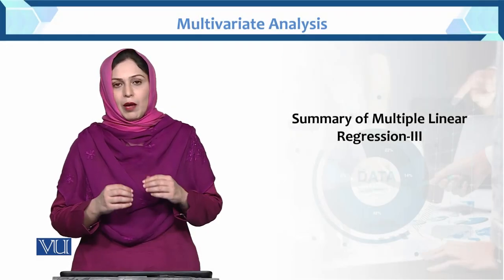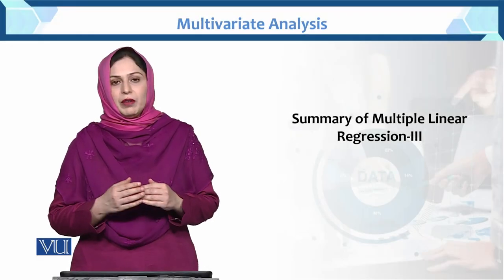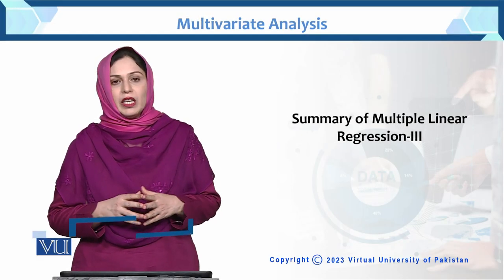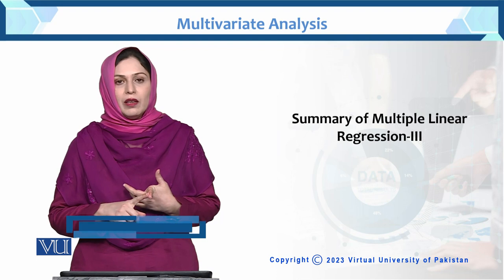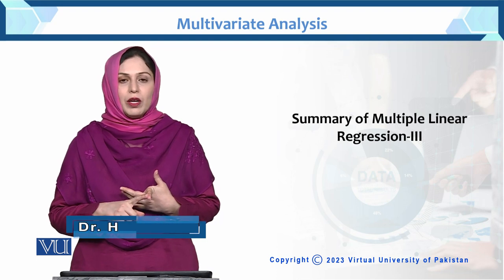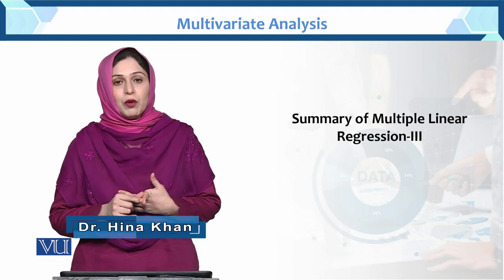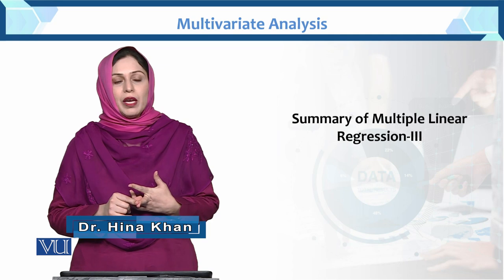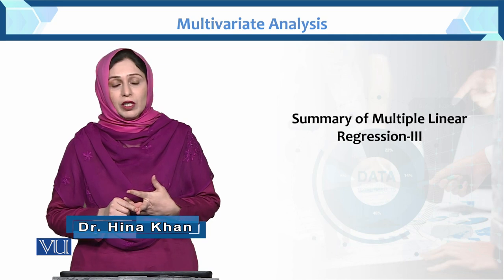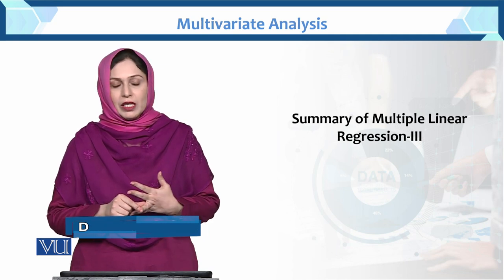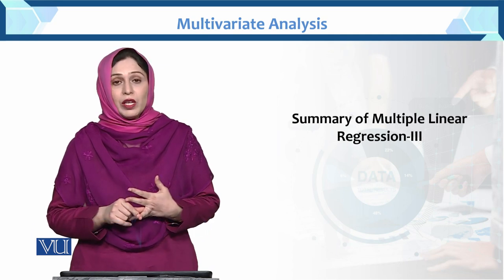Dear student, now we have seen the previous summary. Summary of multiple linear regression part 1: we found the beta properties. In part 2 we found the residuals properties. Now we will check summary part 3.